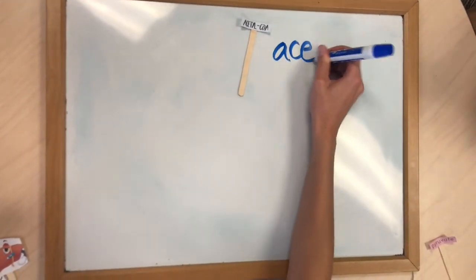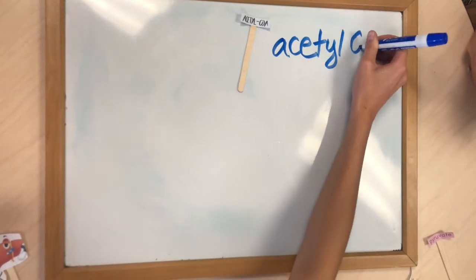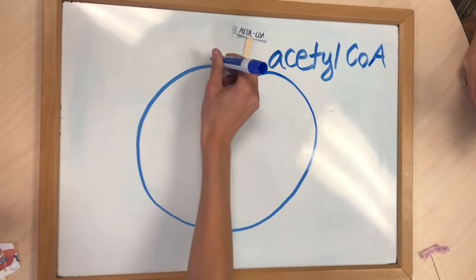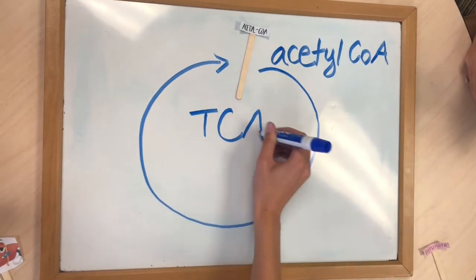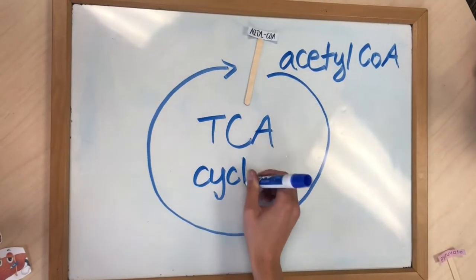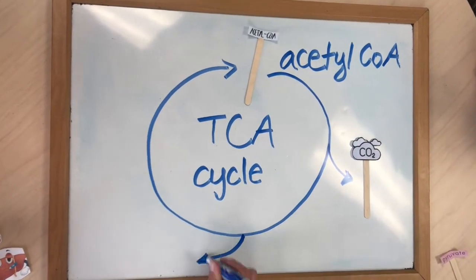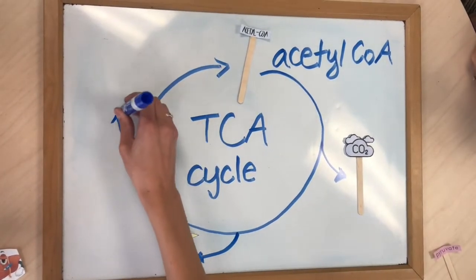Acetyl-CoA goes into the TCA cycle. Carbon dioxide is released into the cell. NADH and FADH2, which are electron carriers from our previous video, take electrons from the TCA cycle and move them to the electron transport chain.